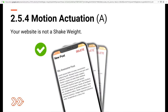The next is 2.5.4 Motion Actuation, a level A addition. Your website's not a Shake Weight, so you cannot rely fully on motion gestures to complete a task. If you do have a website or app where a motion gesture — like shaking a phone — performs an action (on iPhone apps shaking sometimes deletes text), you must have another way to do that. So here you can either shake to delete, or you can simply delete by hitting a button.